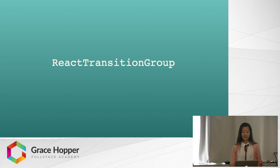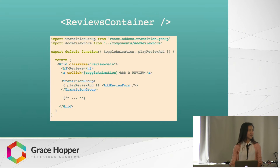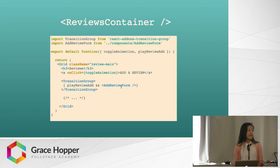Here is my reviews container. You can see that I'm importing TransitionGroup from React add-ons transition group, and calling it down in the return. The TransitionGroup is wrapping over the AddReviewForm, which is the element that toggles in — it's mounted on the DOM when 'playReviewAdd' is true. So the user clicks the 'add a review' link, that runs the click handler to toggle animation, which turns playReviewAdd to true, and the AddReviewForm mounts on the DOM.